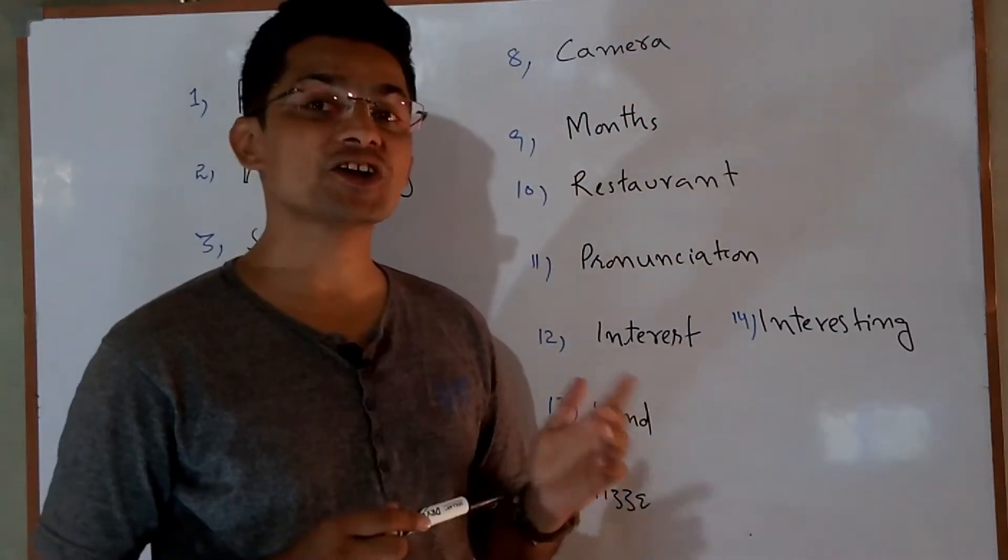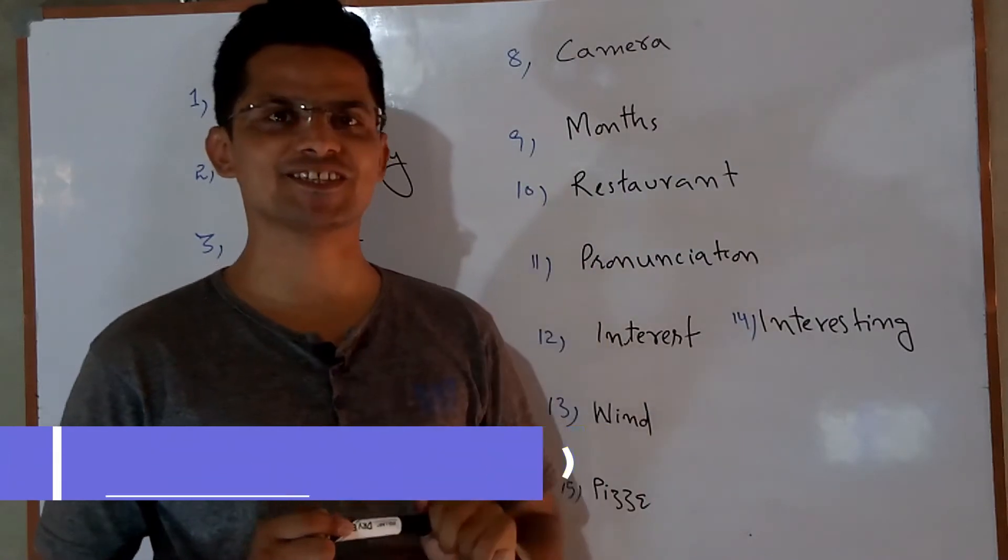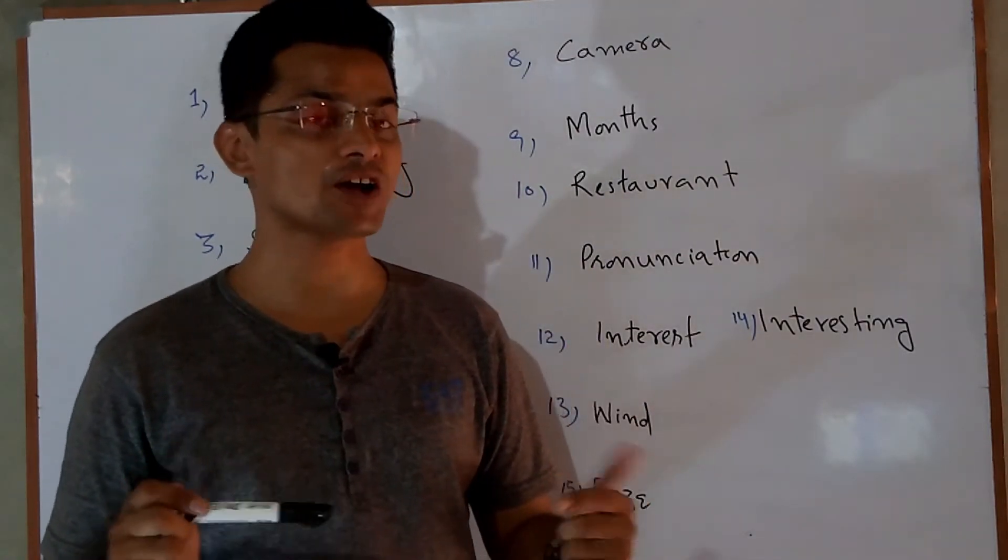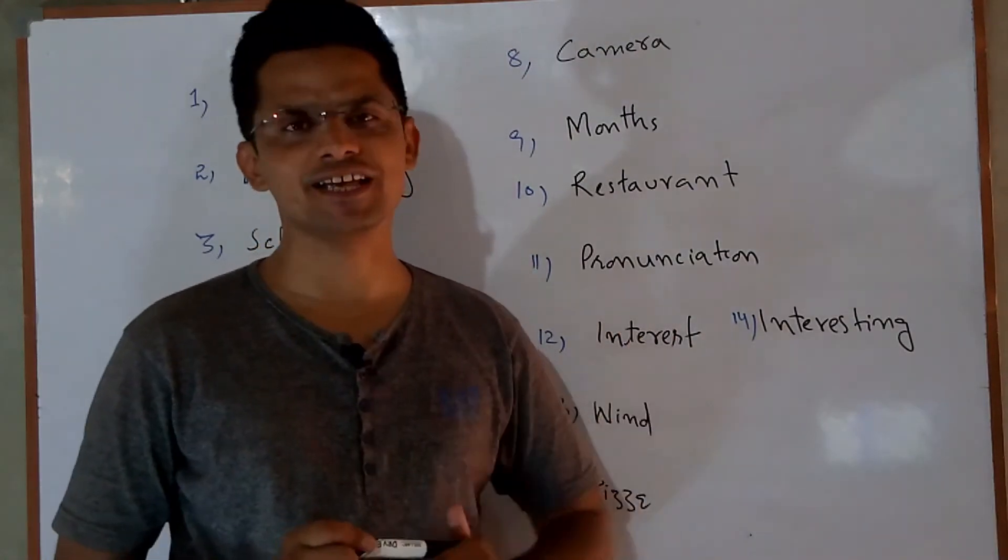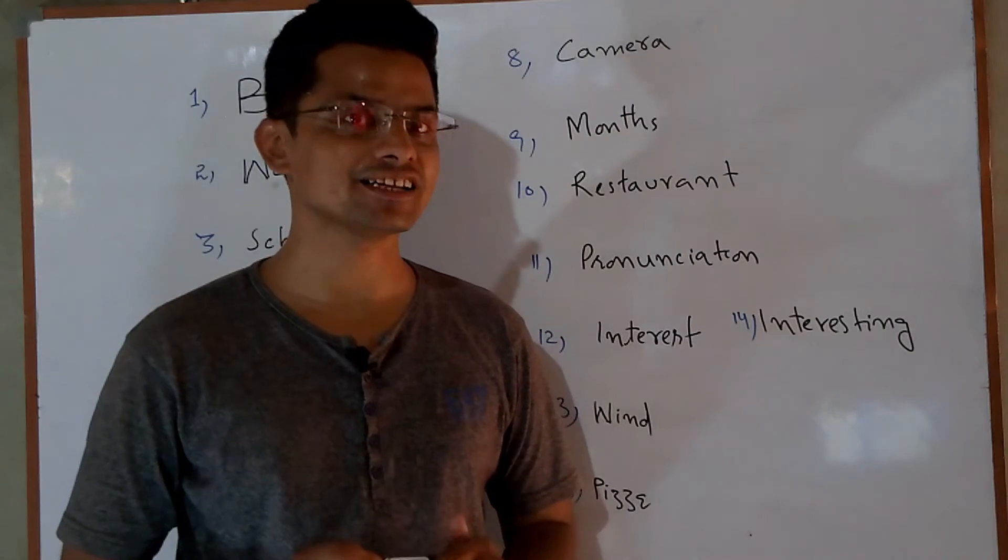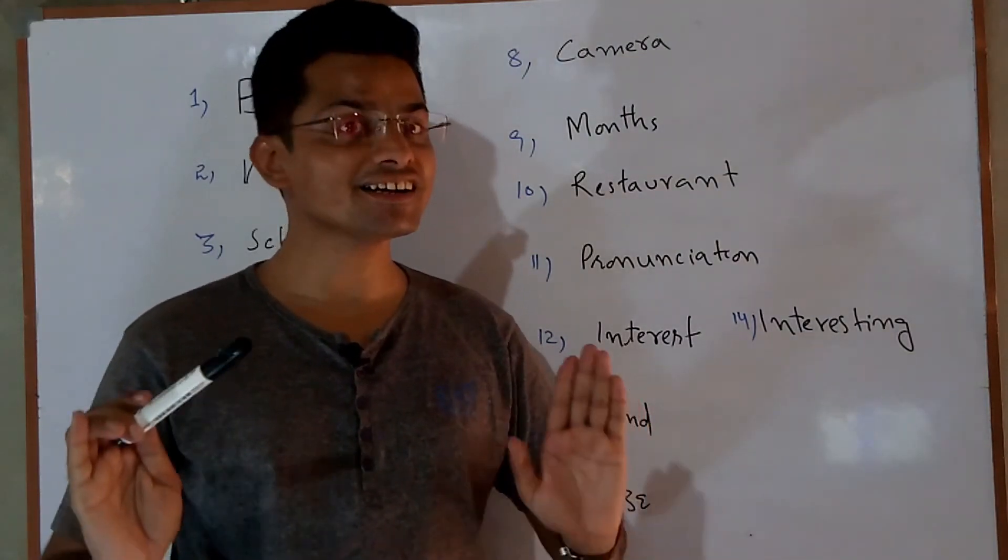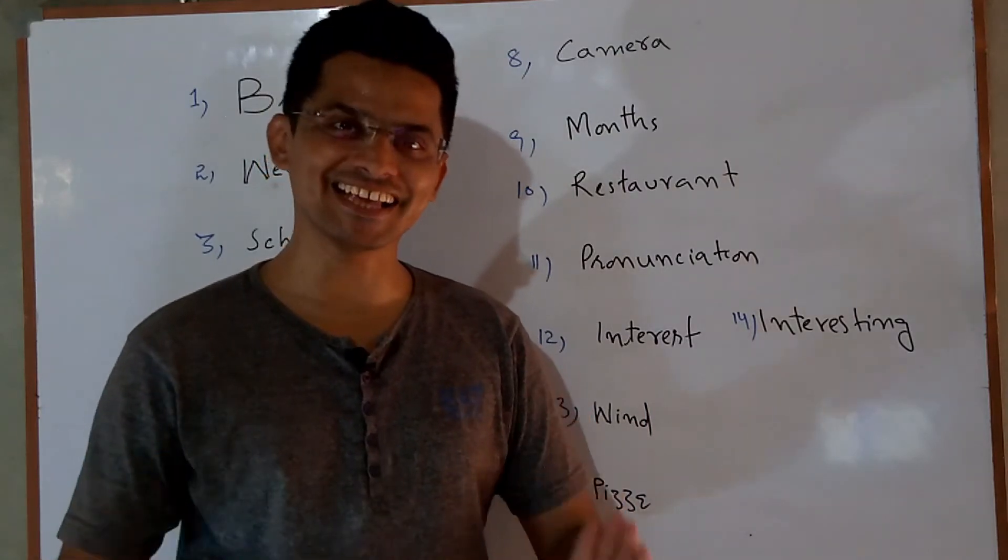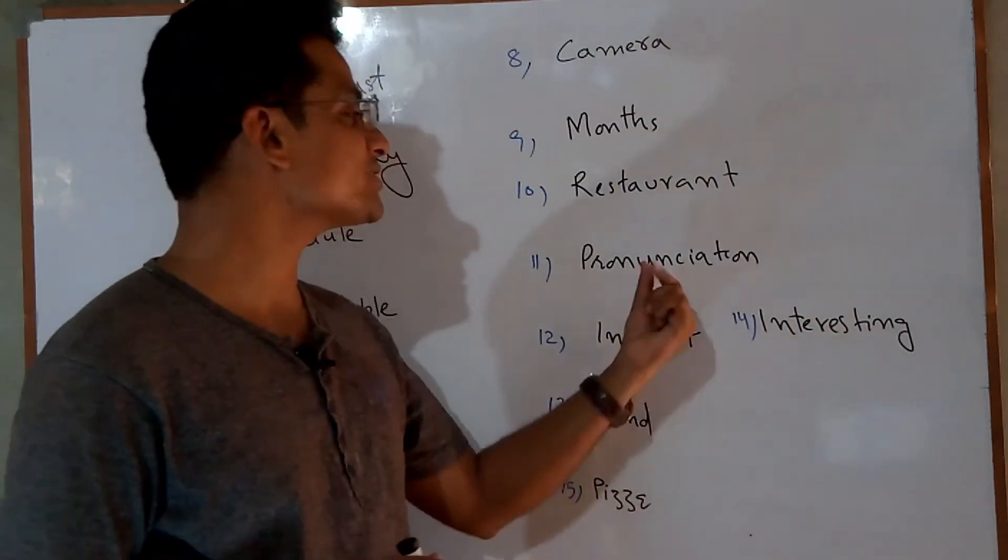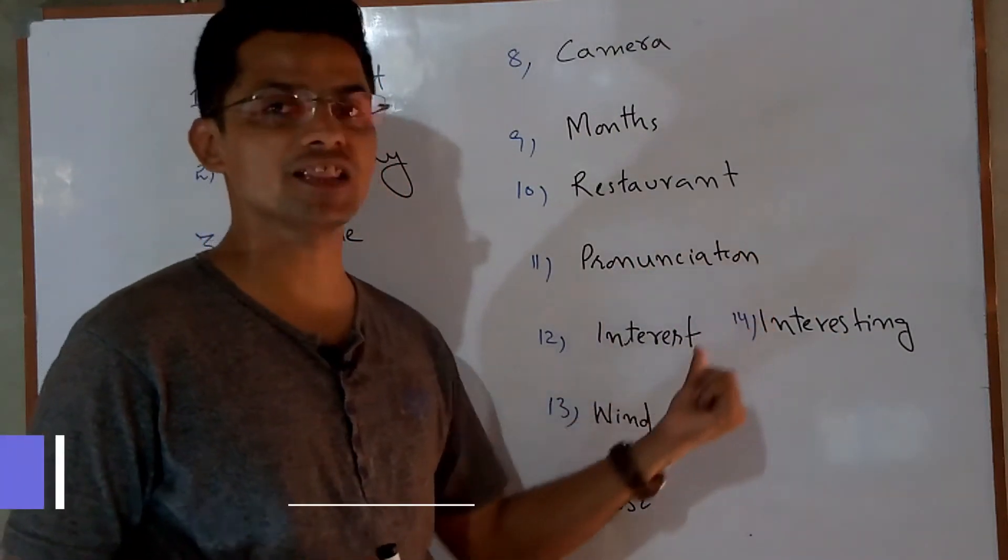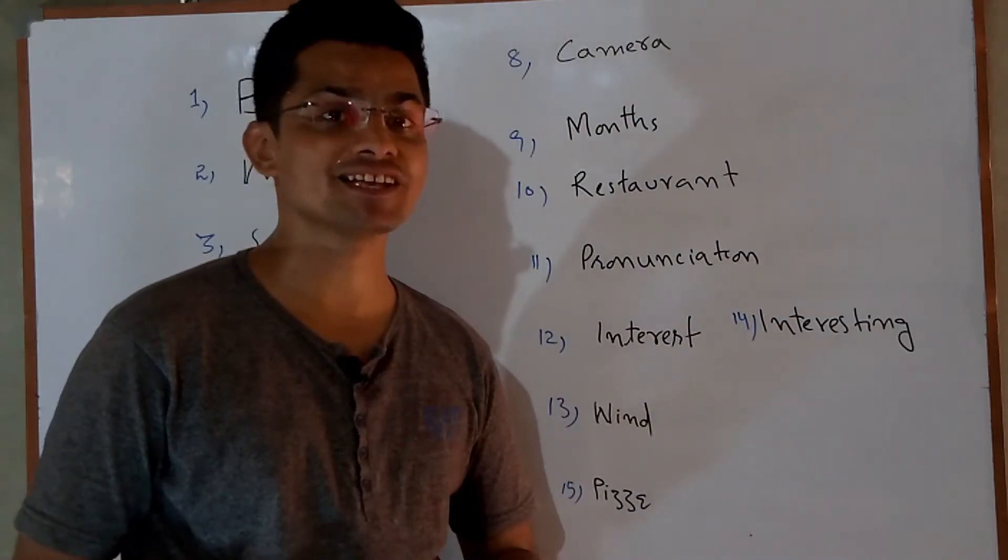Next: Restaurant. Restaurant. Two syllables. We have arranged dinner for you at the restaurant. Next word students is pronunciation. Correct pronunciation makes you better speak English.